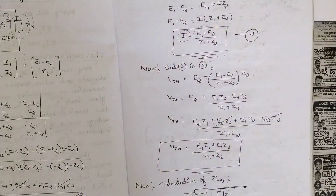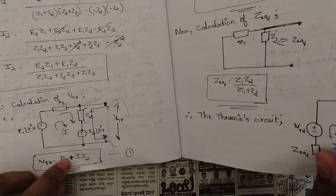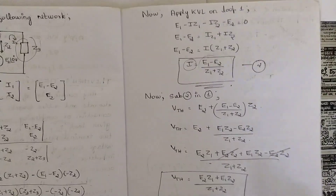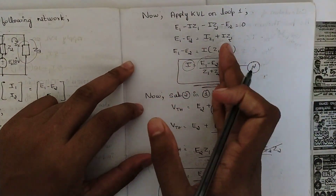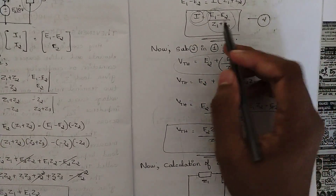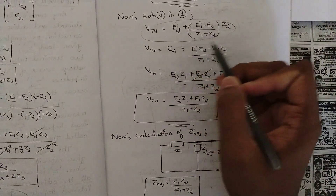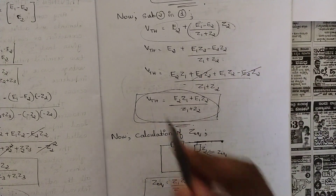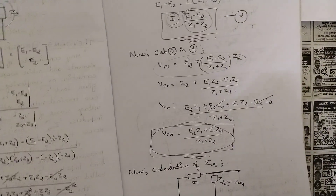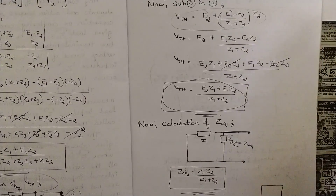Keep the current on one side and all other components on the other side, including all voltages, because our goal is to find the current. Name this as Equation 2. Then substitute this current value back into Equation 1. Whatever current we get, substitute it into the V_th equation and solve for V_th. This is the proof part — you can take a screenshot or pause and refer to it. That is how we obtain V_th.